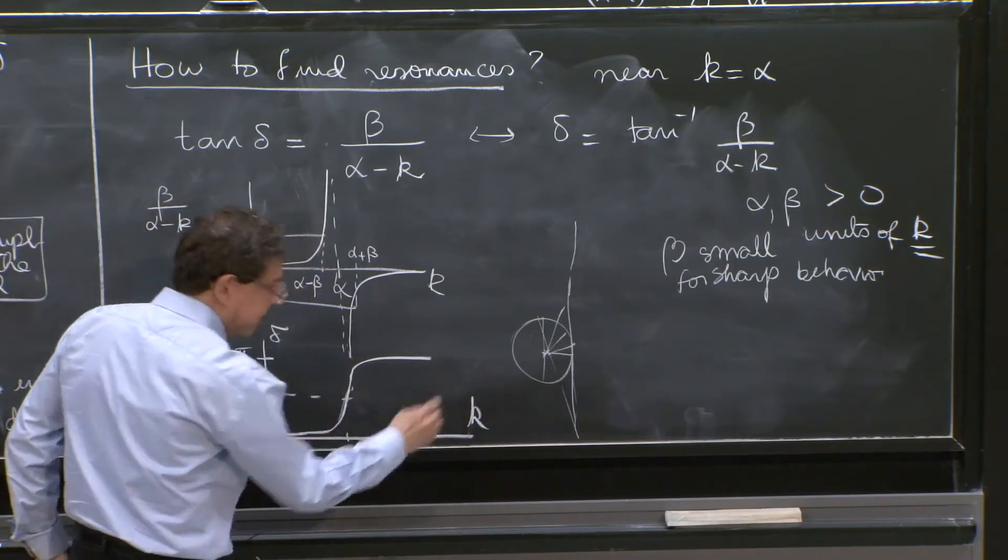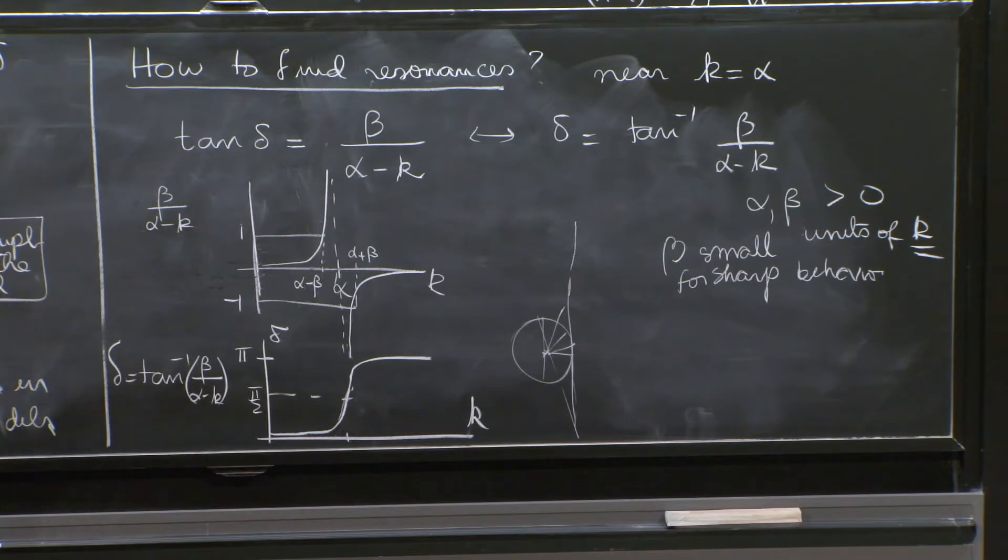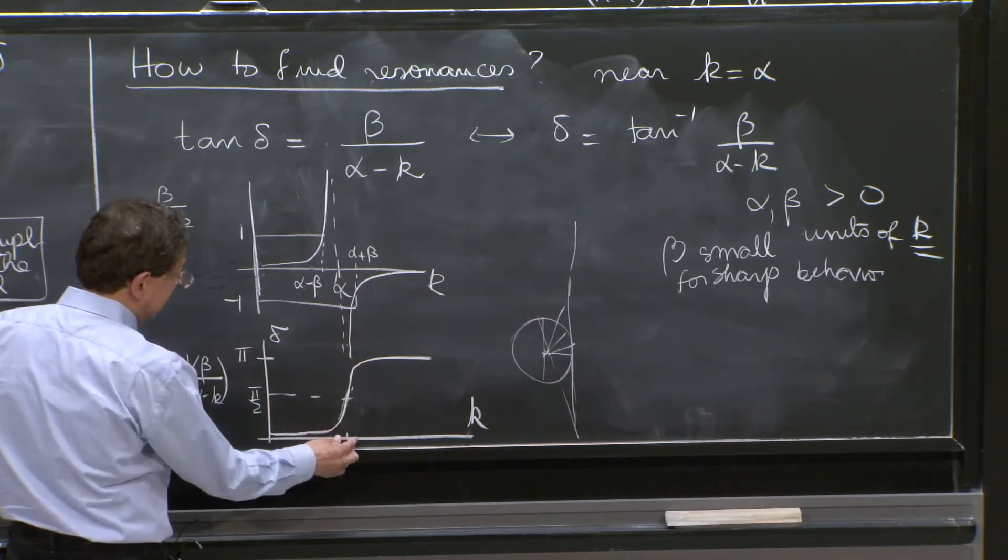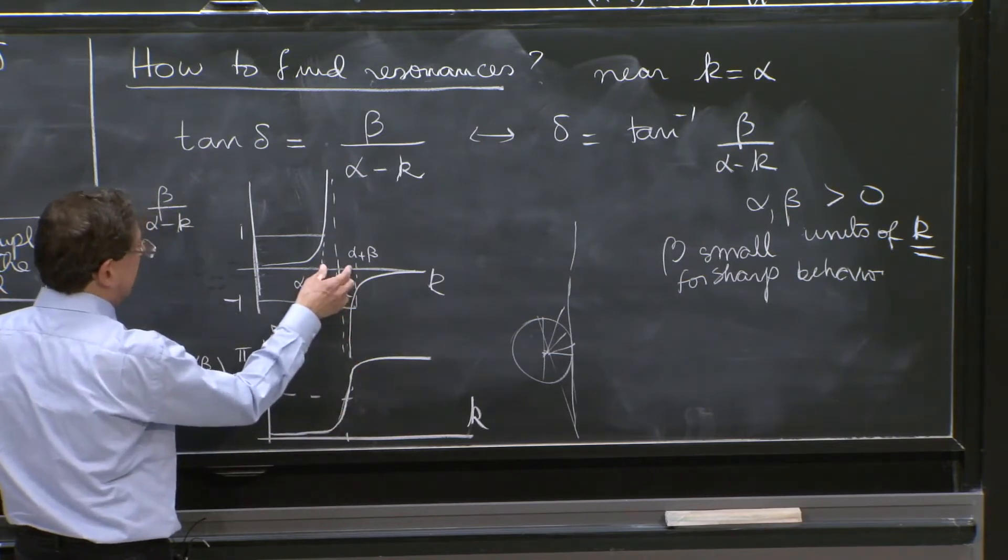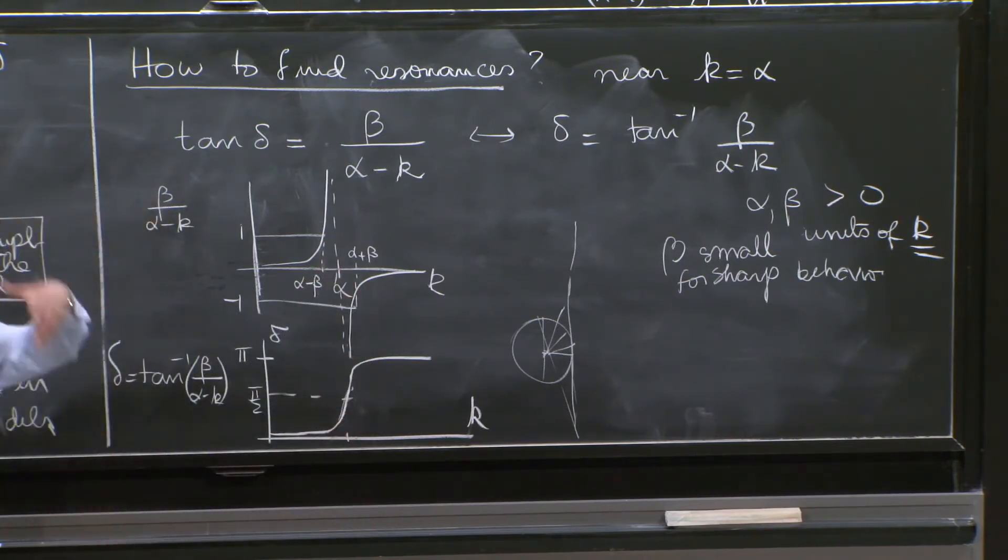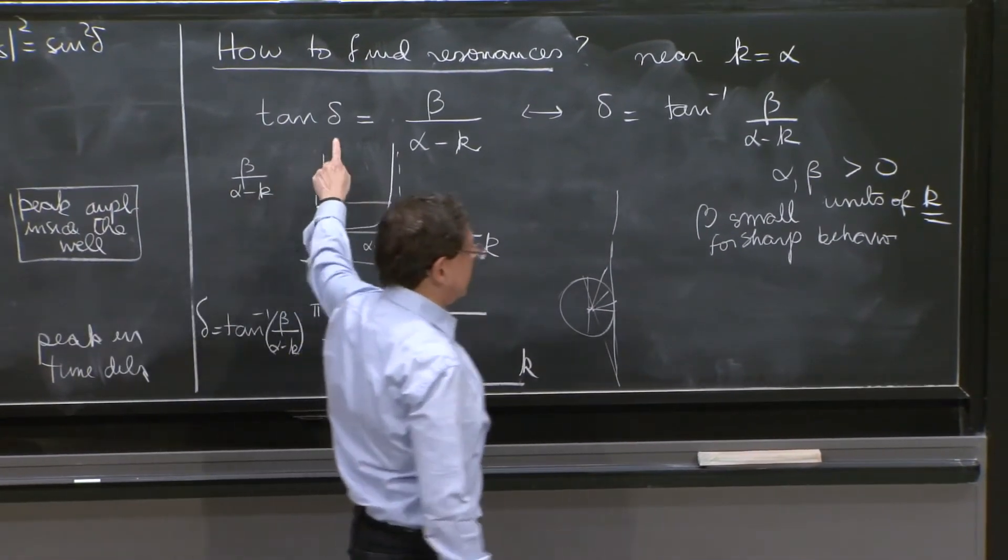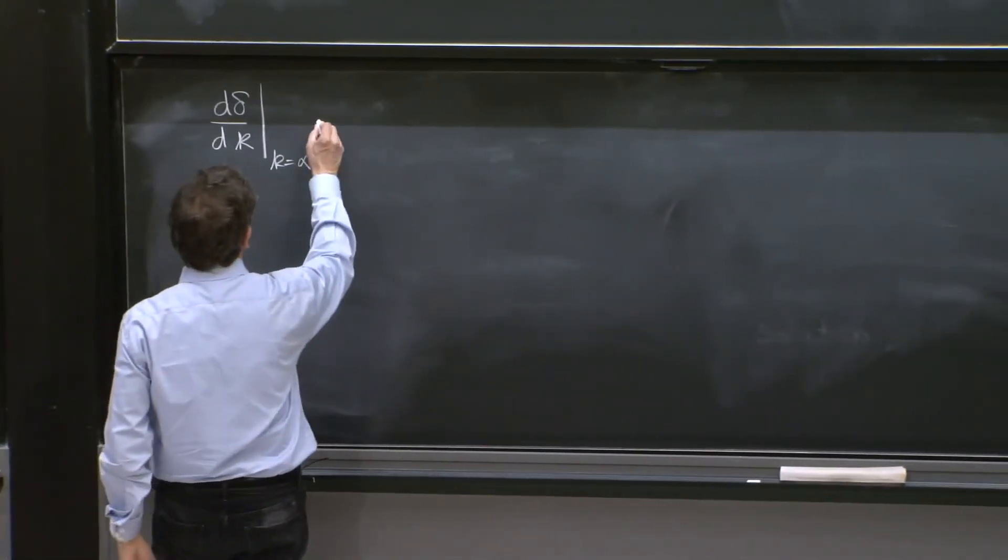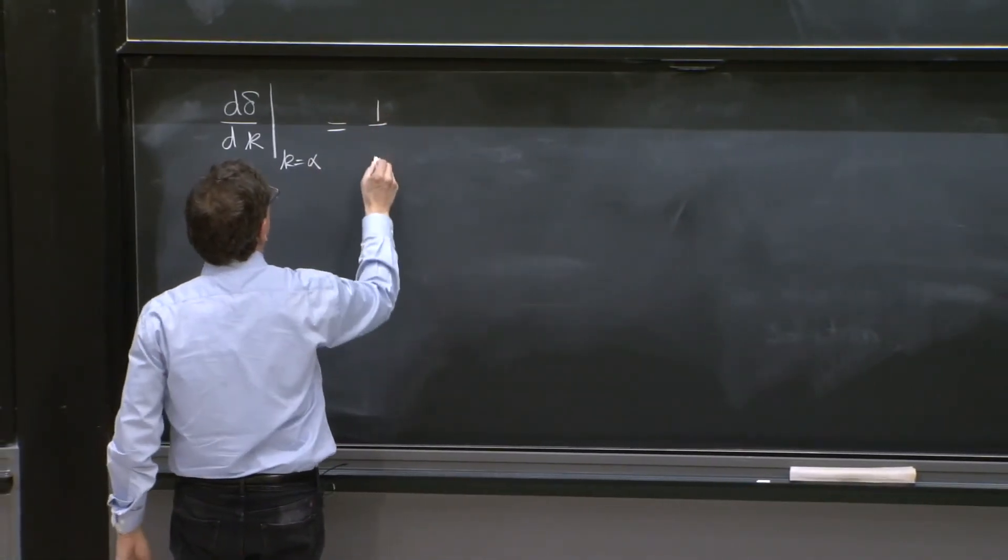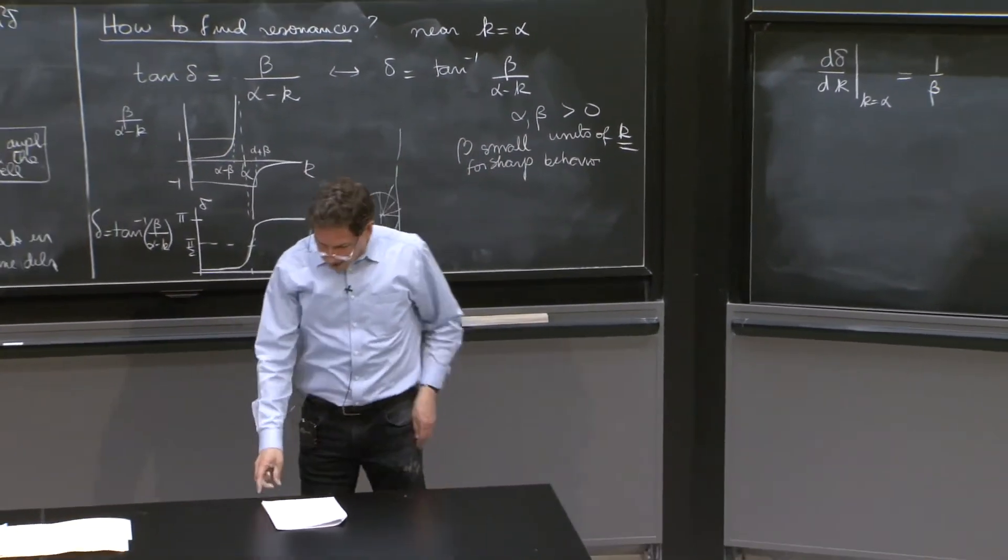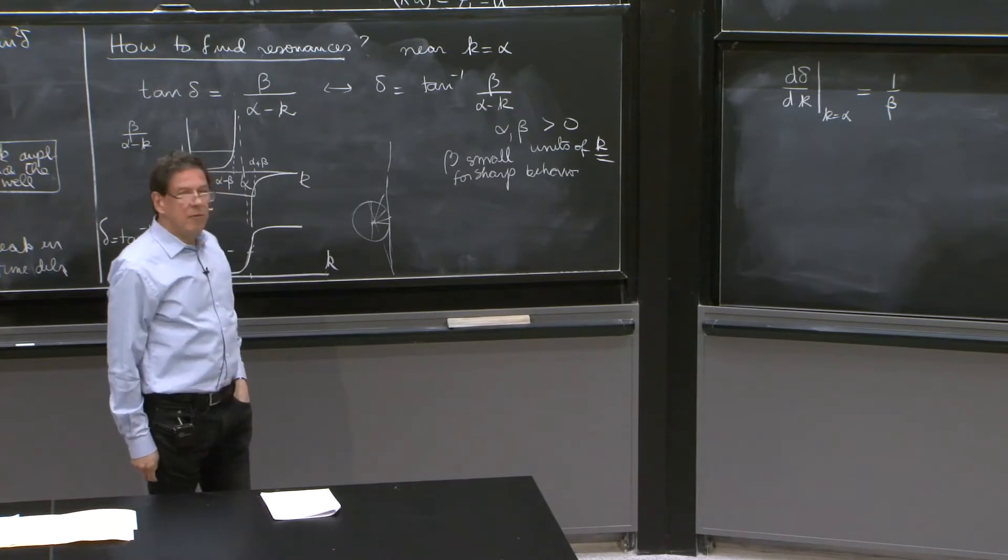So here is δ, here is k, and there's the derivative at this k. And how should it be? Well, basically, the phase changes by amount π over a distance β or 2β. So this must be a number divided by β. You can calculate this derivative from this equation. It's a nice exercise. Try doing it. That's just 1 over β. And that's the result, 1 over β.